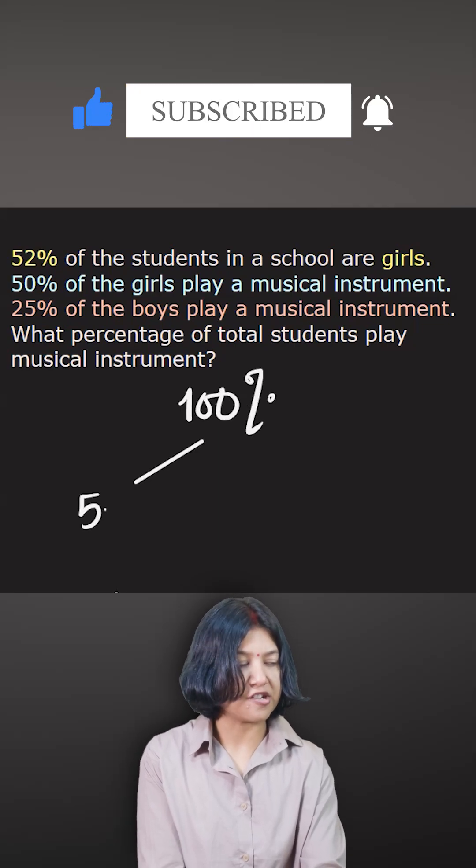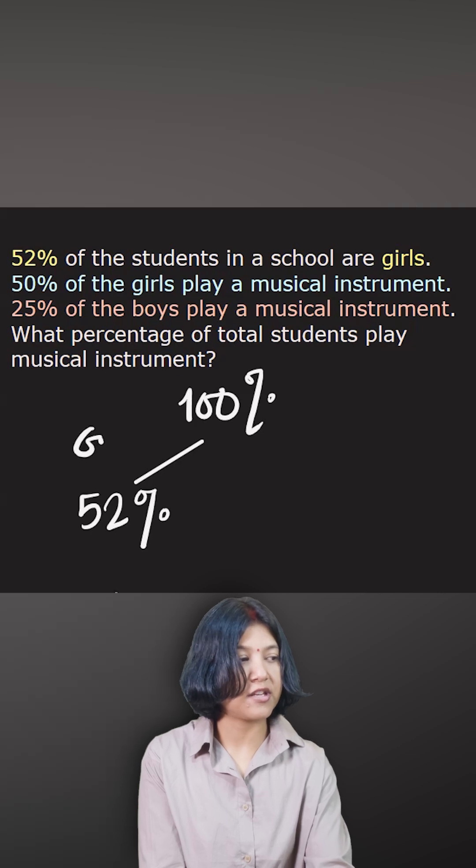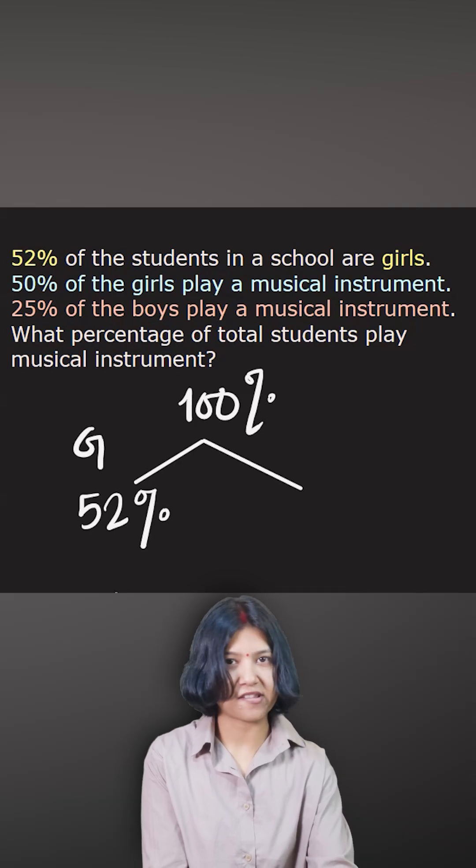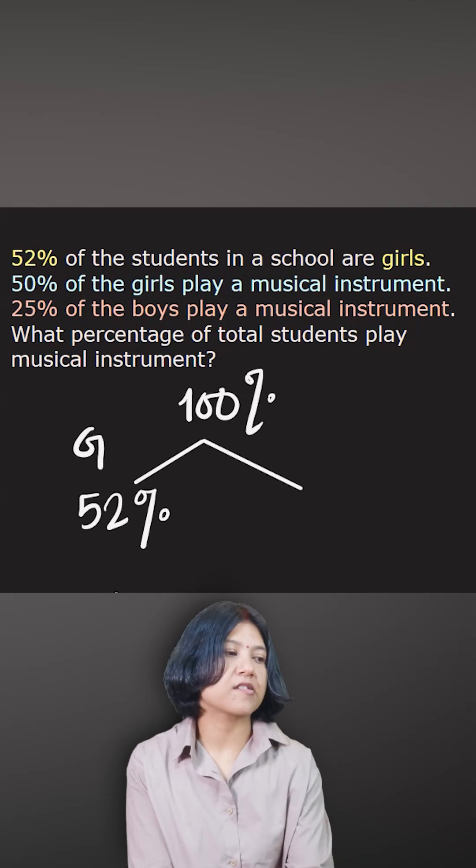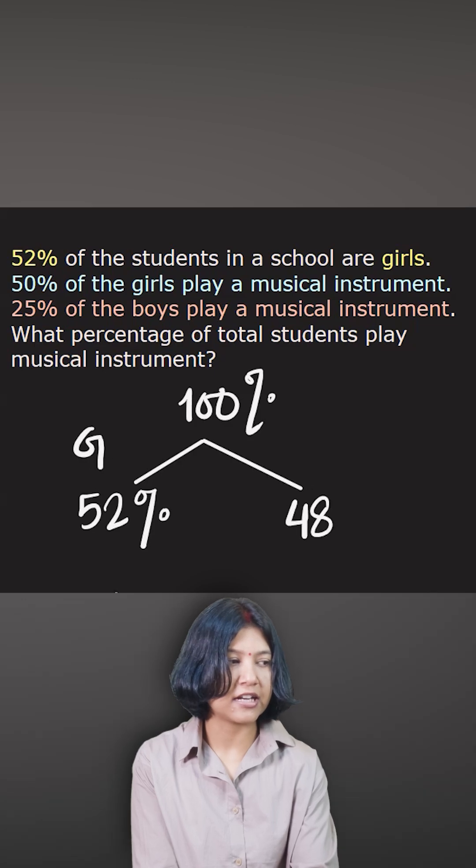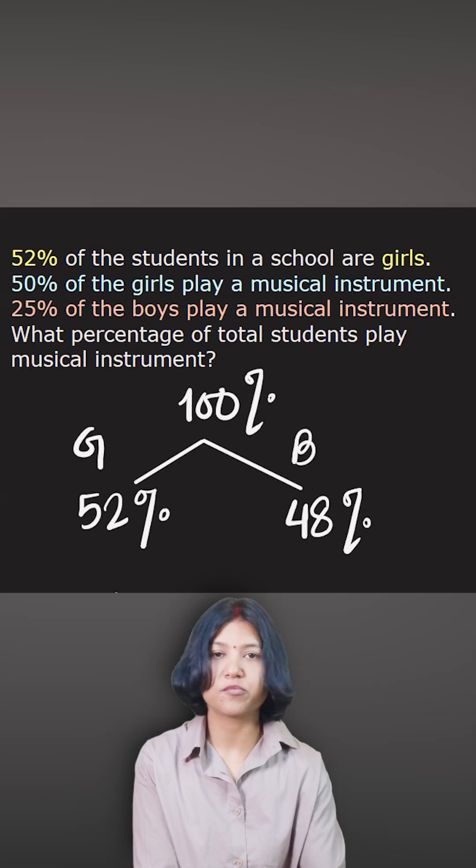And now 52% are girls. If 52% are girls, then we need to know how many or what percent will be boys. So 52 is removed from 100, I get 48%. That will be the percentage of boys.